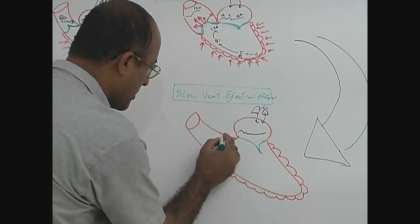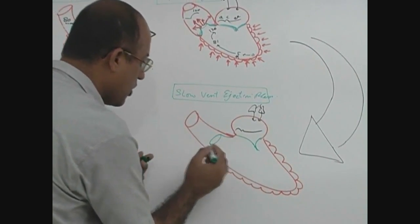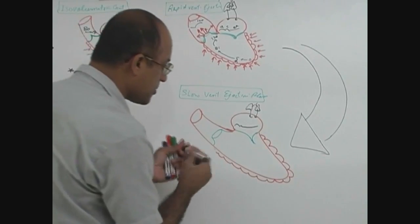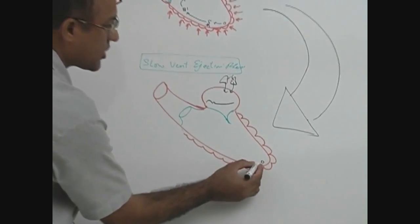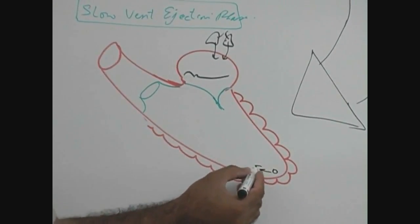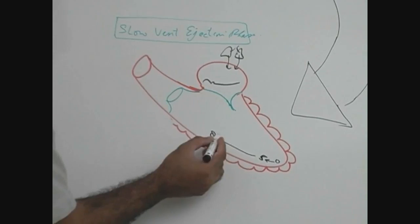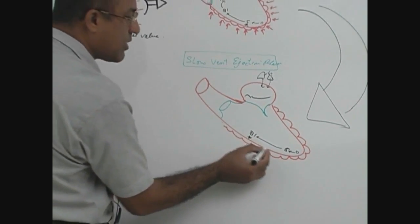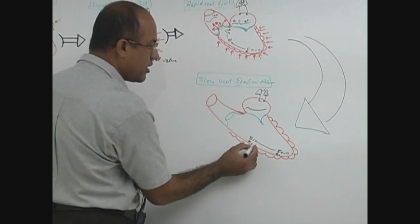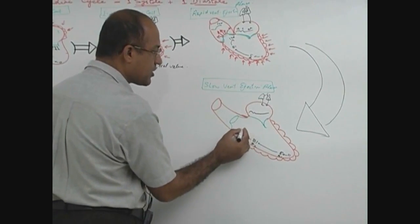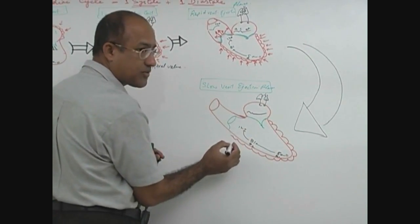Aortic valve is still open. You remember at pressure of 5, mitral valve was closed. At pressure of 81, aortic valve was open. At pressure of 120, it was the maximum, rapid ejection phase.